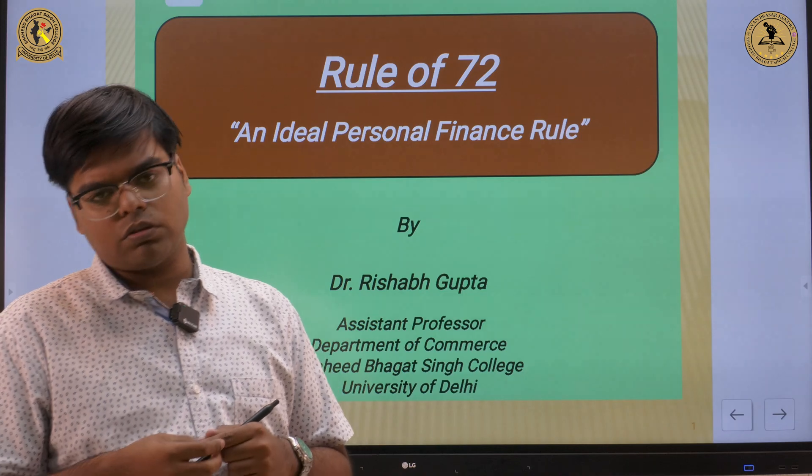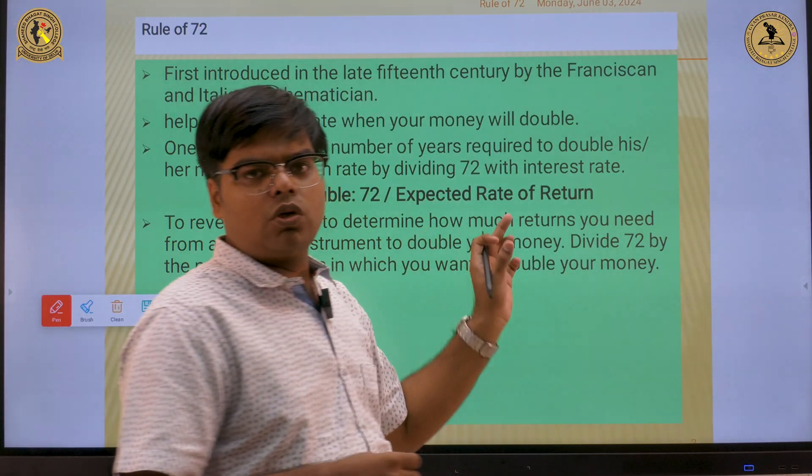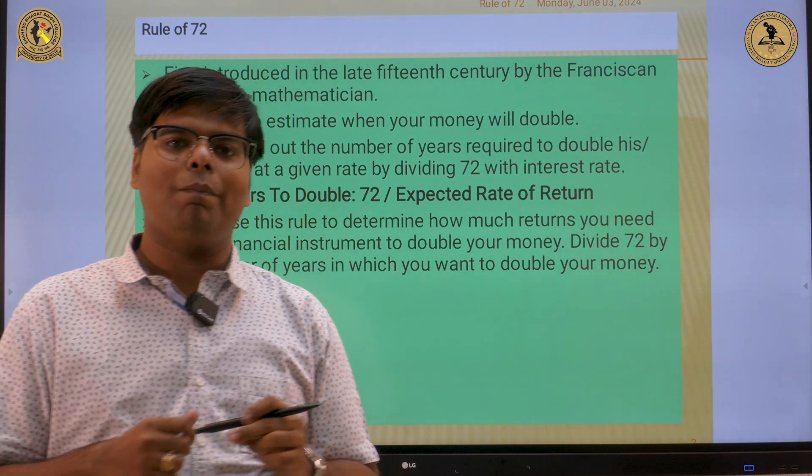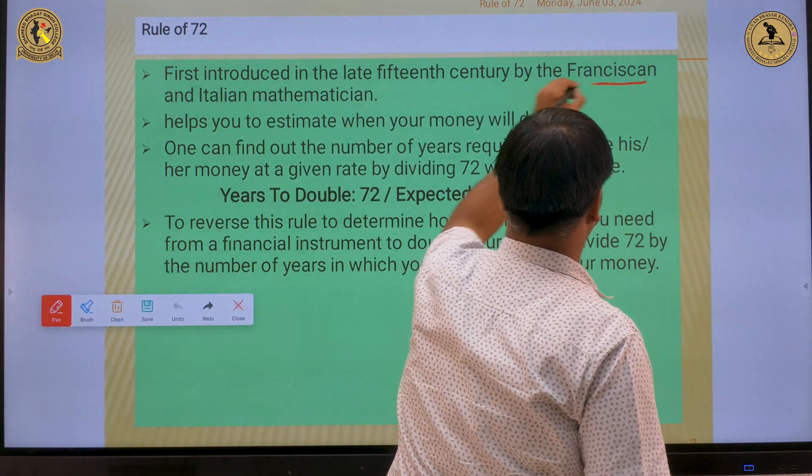A bit confused? So let's find out the solution to it. The rule of 72 came up in the late 15th century by the Italian and the Franciscan mathematician.